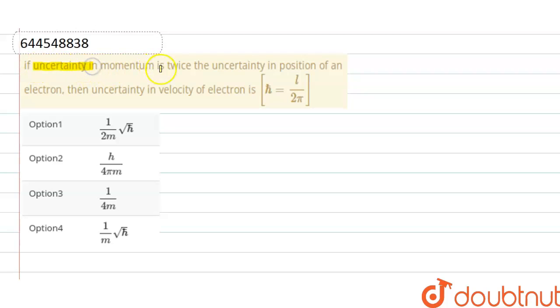If uncertainty in momentum is twice the uncertainty in position of an electron, then uncertainty in velocity of electron is? So in the question, given is that uncertainty in position is twice the uncertainty in momentum. According